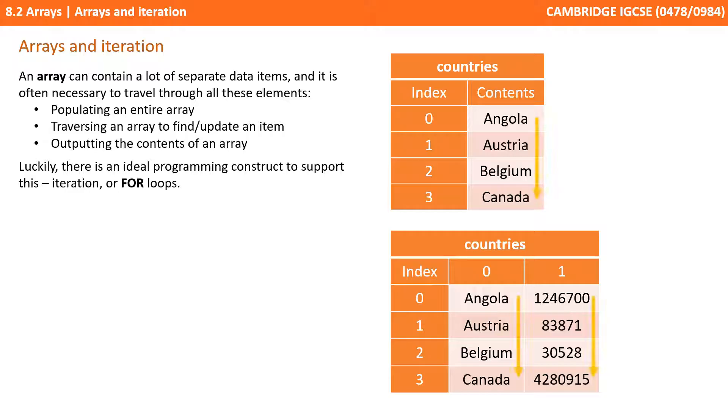As arrays can contain lots of separate data items, it is common to need to travel through all the elements in an array. Maybe you want to populate the entire array with some initial data, traverse through it methodically to find or update an item, or simply output the entire contents of an array. Luckily we already have an ideal programming construct which supports this, and that's iteration, specifically the for loop.